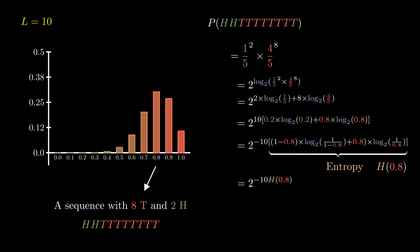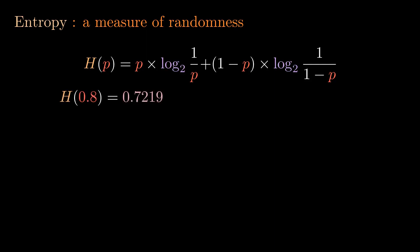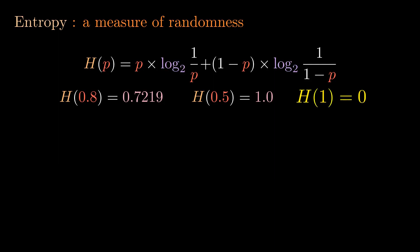The required probability is 2 raised to minus L times the entropy. Entropy represents the amount of randomness in the biased coin which generates heads or tails. For our biased coin with tails probability 0.8, we compute the entropy. For a fair coin with probability 0.5, the entropy is 1. For a coin with both sides tails, the entropy is 0 — intuitively, the outcome is always tails and hence not random. Indeed, the coin with probability 0.5 has maximum entropy and is most random.